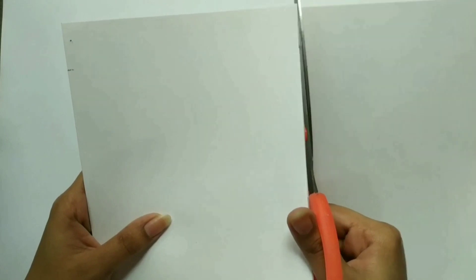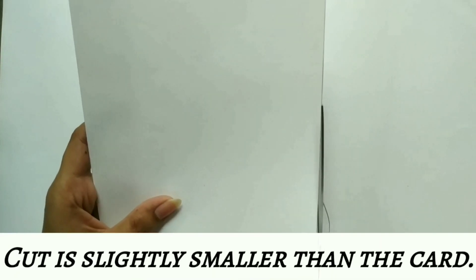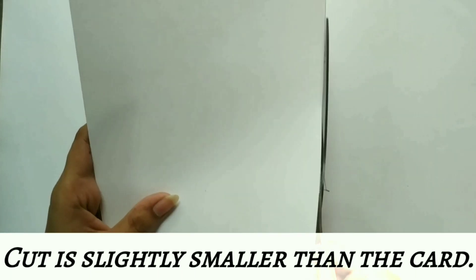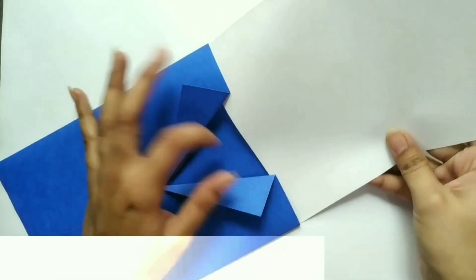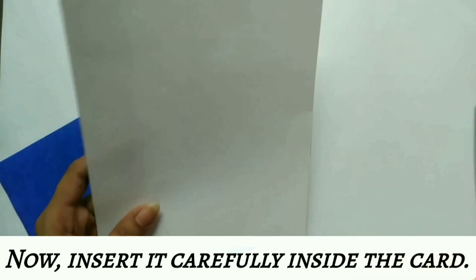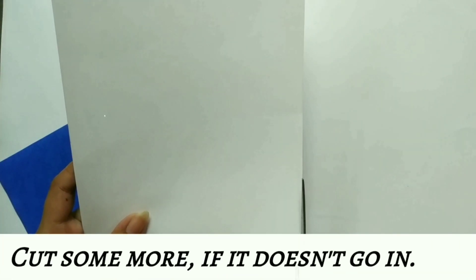Now, we will cut the sheet. Try to fit the sheet inside the blazer. If it does not fit in, then cut the extra part.